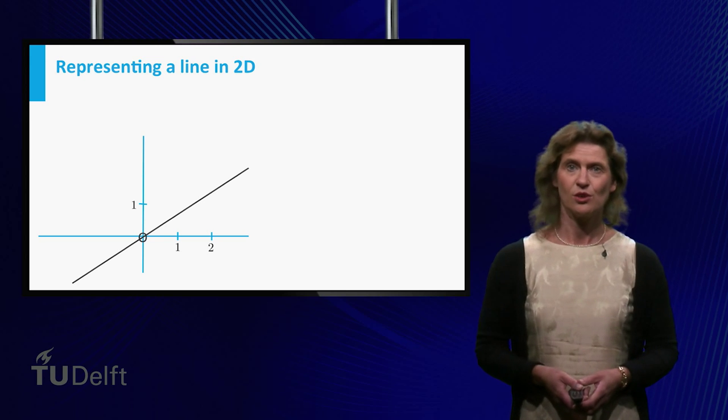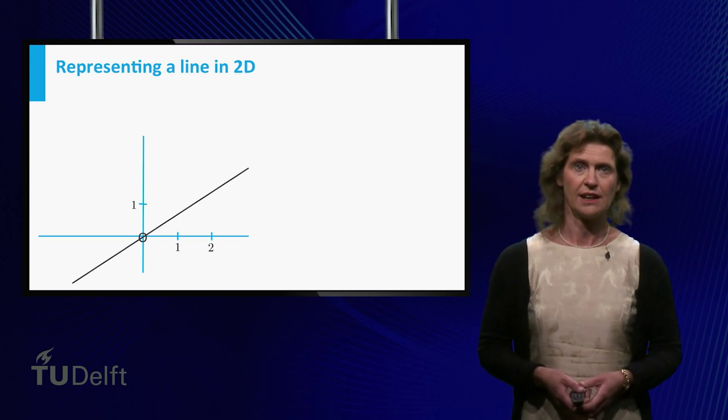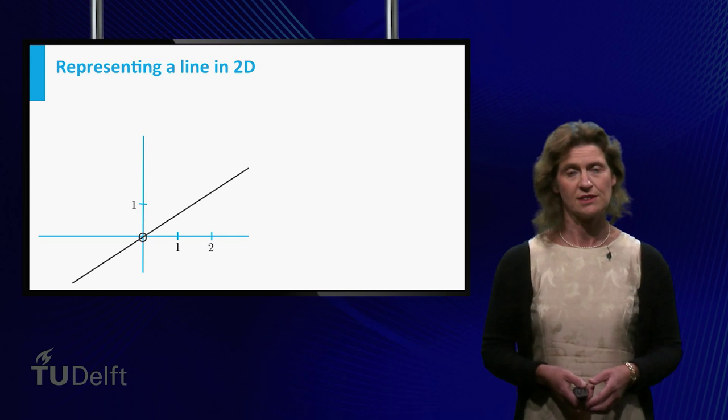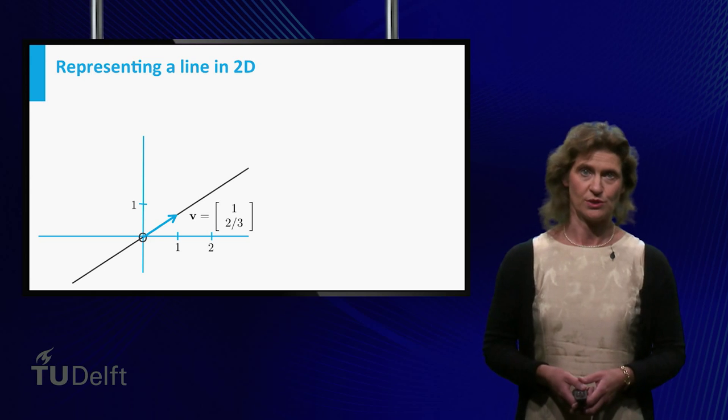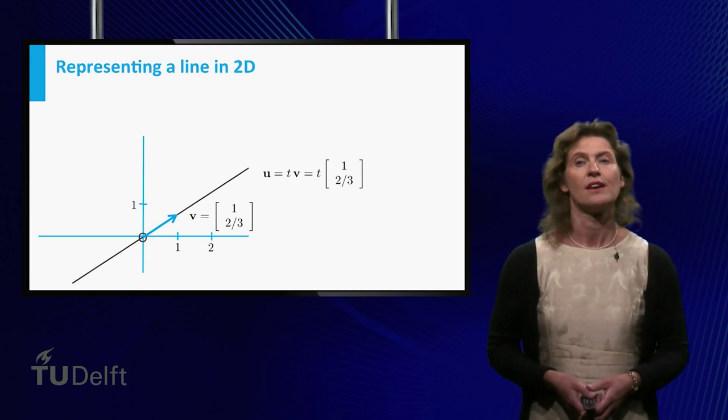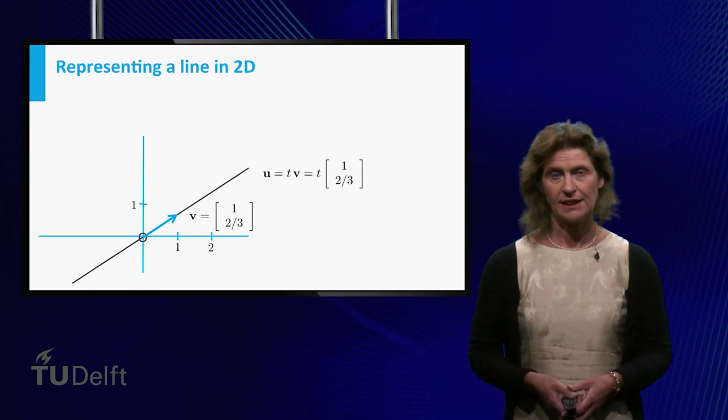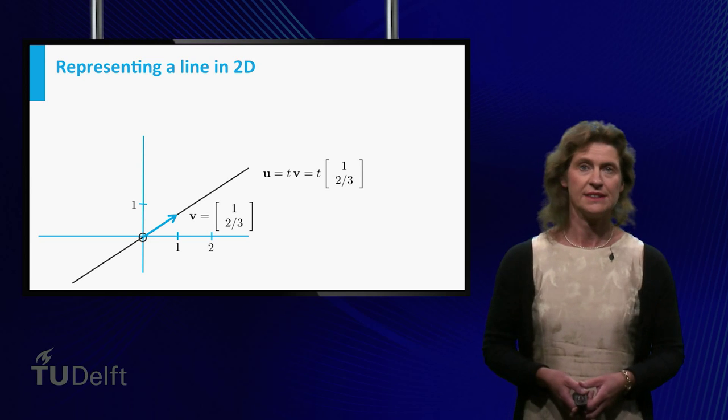And let's now use the fact that you know vectors to describe this line in terms of vectors. Thinking a bit about it, you realize that the points on the line are all endpoints of vectors that are scalar multiples of (1, 2/3). So we can write the vectors on the line as t times v, where t is a scalar.